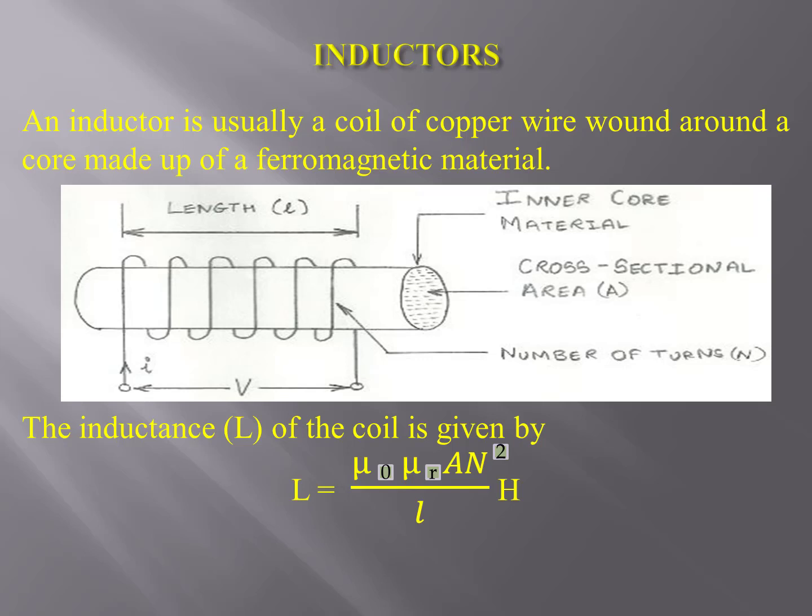Mu_R is the relative permeability of the core material. Capital A is the area of cross-section of the core. Capital N is the number of turns of the coil. And L is the length of the core. Hence, we can say that the value of an inductor depends upon the following factors: number of turns, permeability of the core material, and size of the core.